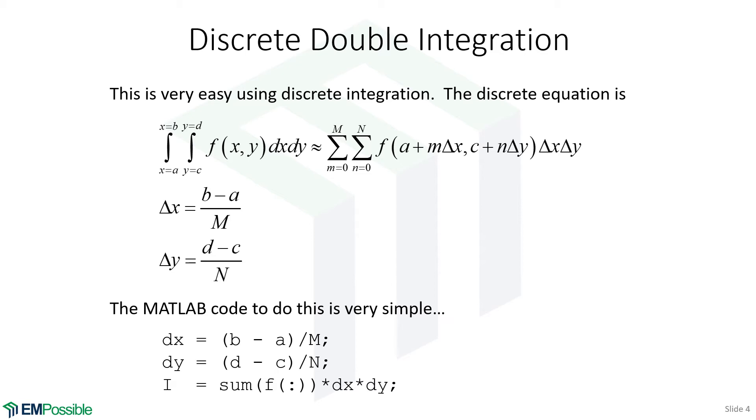I might even add, looking at this, it becomes clear how we could do a triple integration. We might calculate a dz. And then this line stays exactly the same, except we'll have a dx dy times dz. And now we're doing a triple integration, and so on.